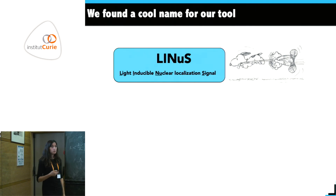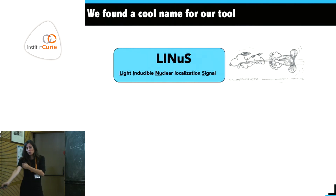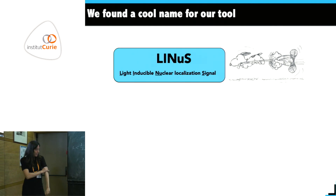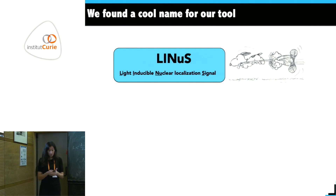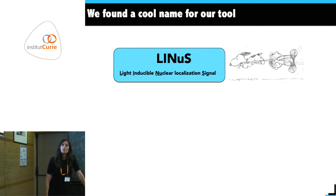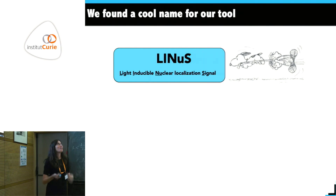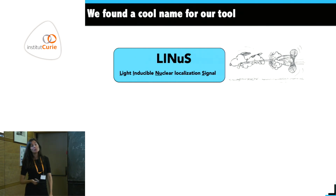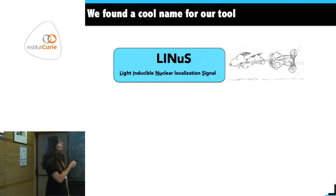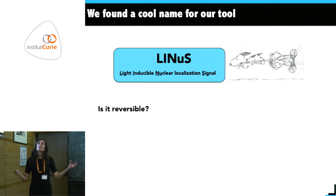We had to find a name for our tool. In the optogenetics field — and really in science generally — you need a cool name otherwise people won't notice. We took a lot of time thinking about it, and I came up with LINUS: Light-Usable Nuclear Localization Sequence, which let us use a nice cartoon of something running into the nucleus.